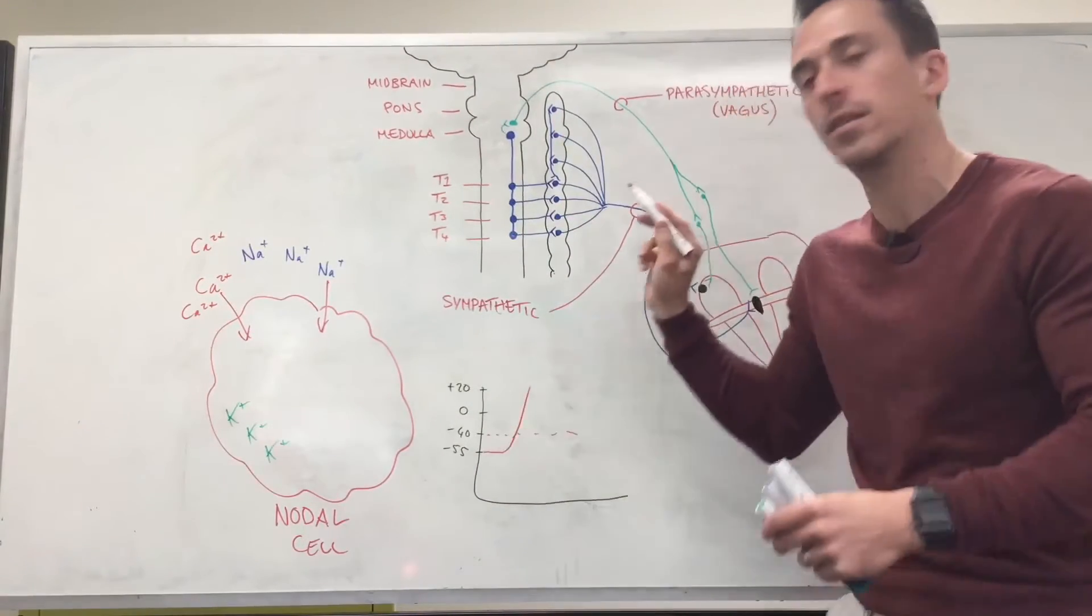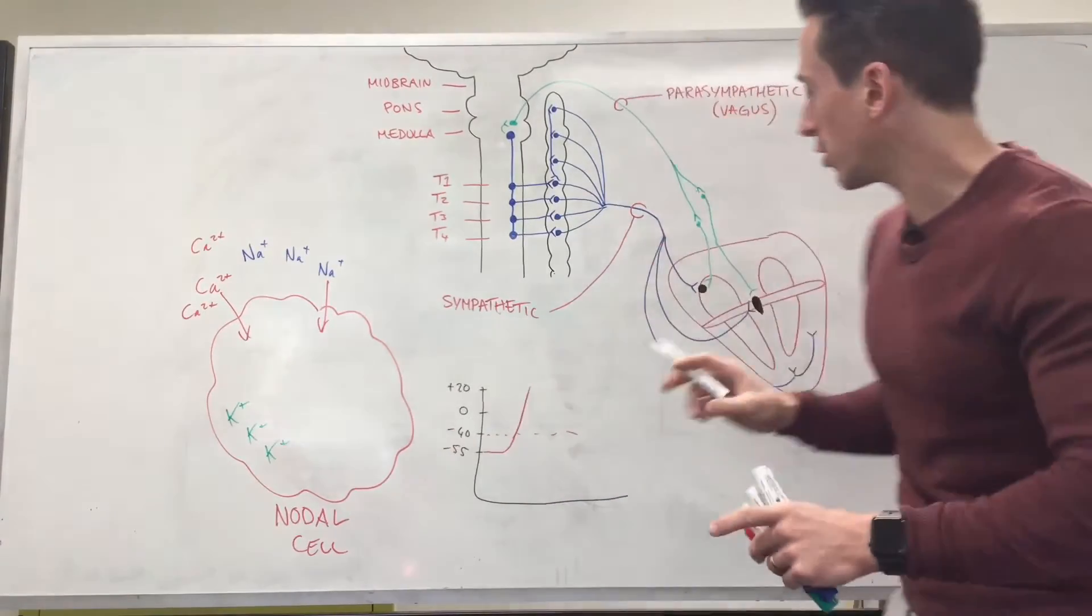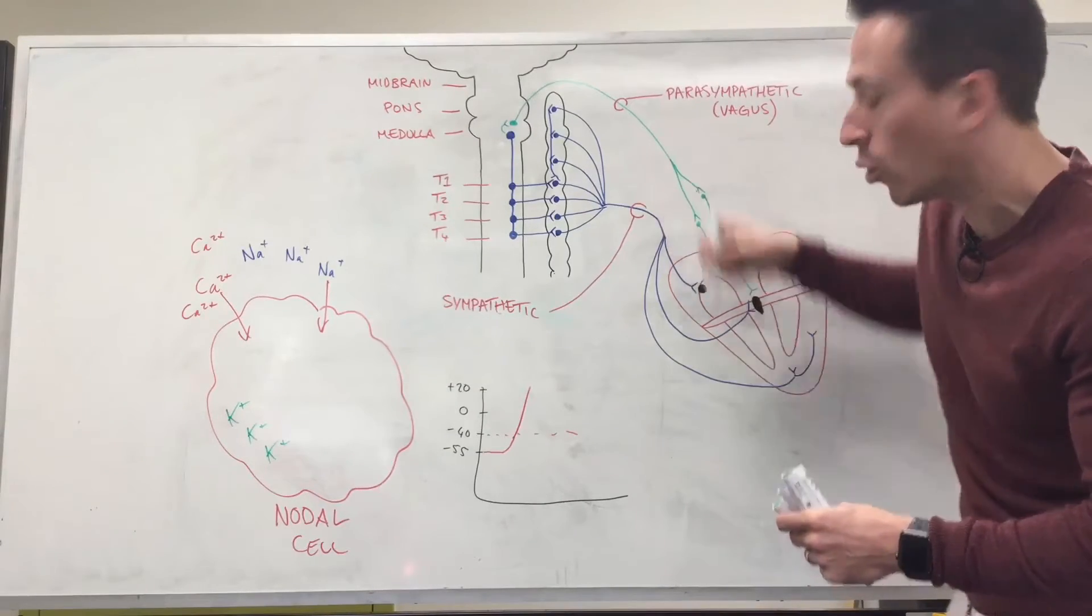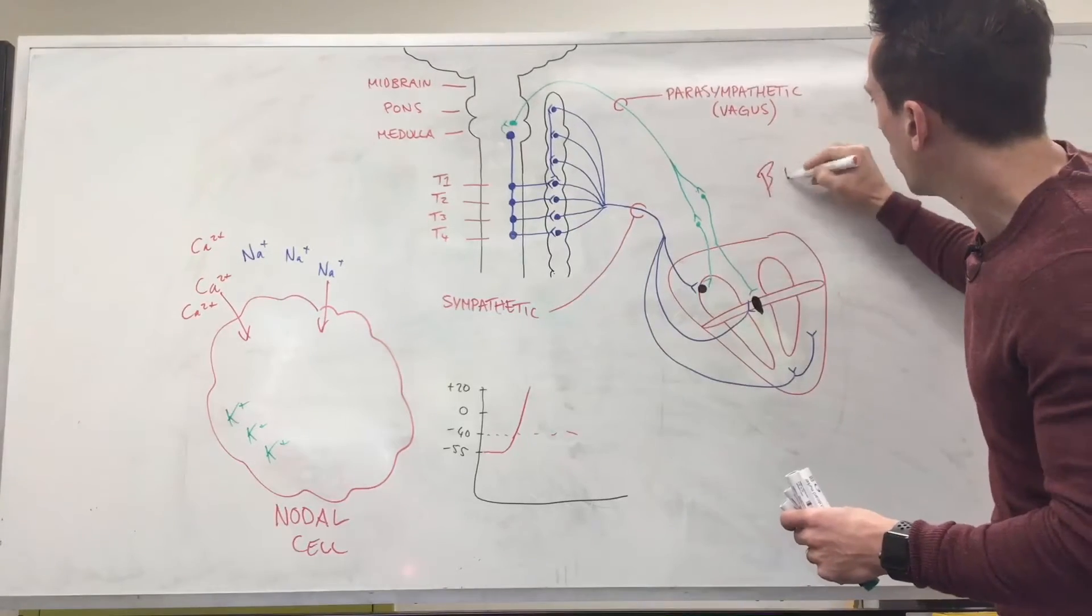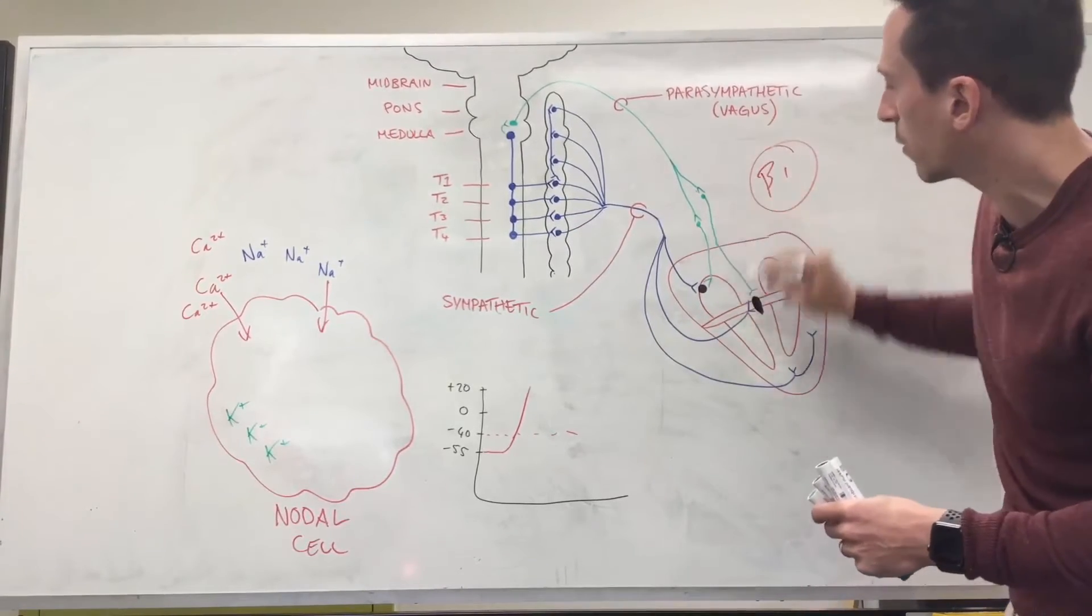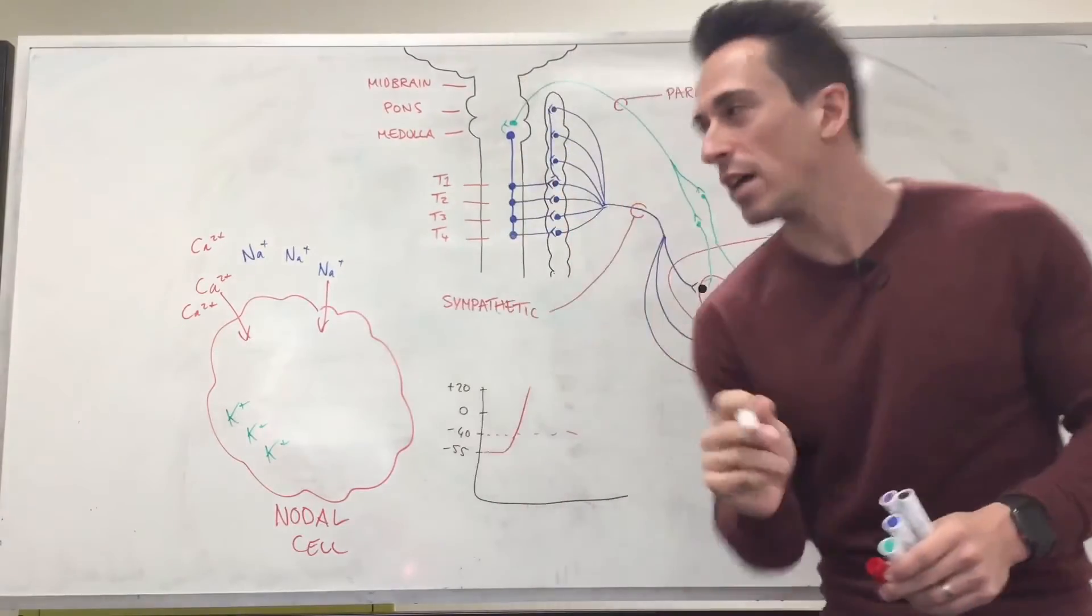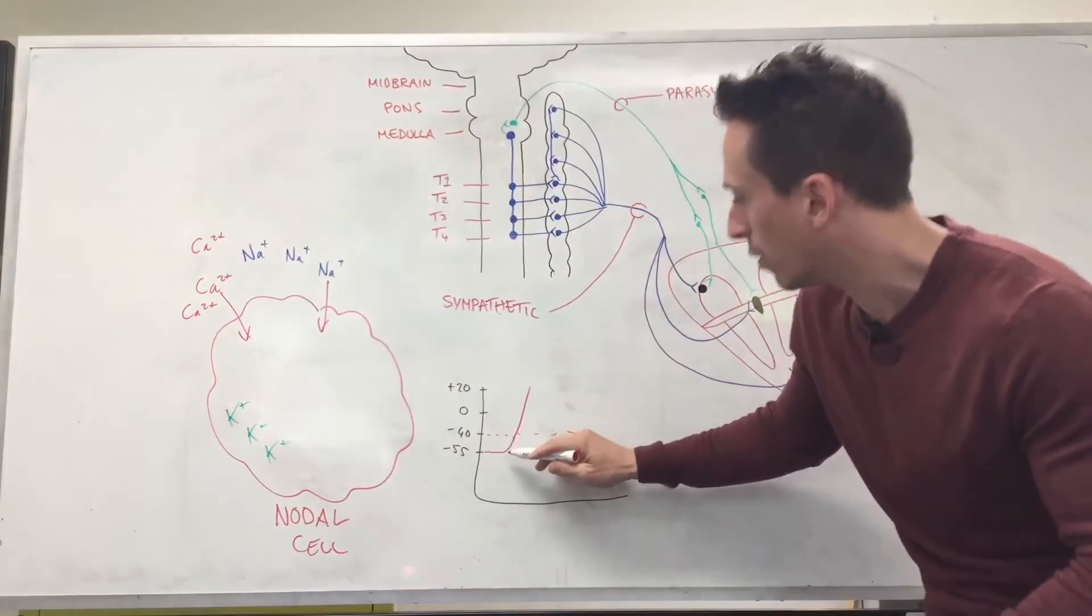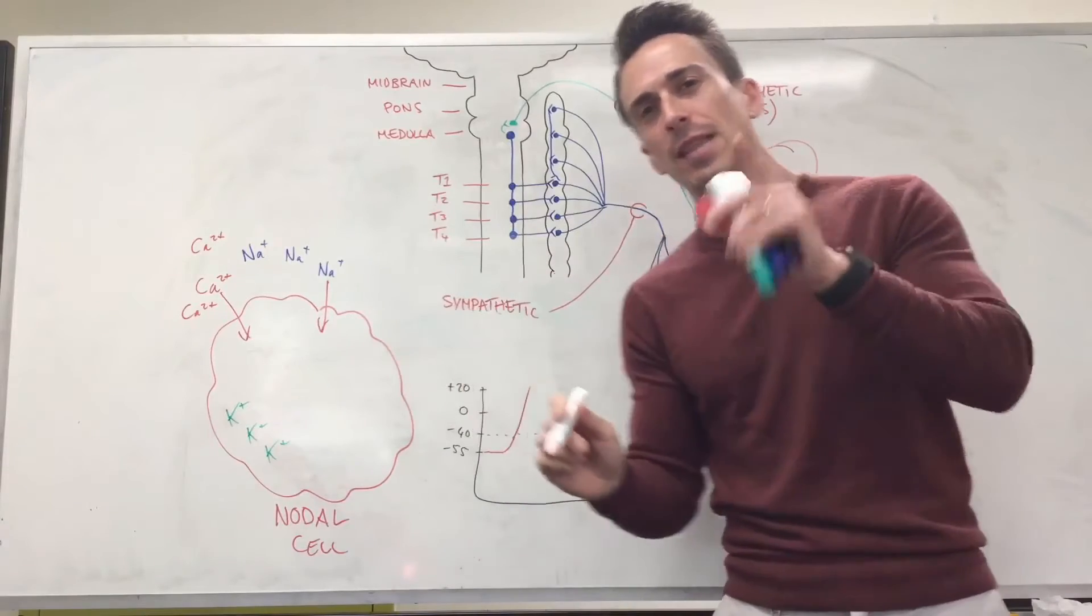Now what we've done is we've sent an electrical signal through the SA node and the atria. What the sympathetic neurons do—the sympathetic innervation when it releases adrenaline or noradrenaline—is it binds to specific receptors here that are called beta-1 receptors. Beta-1 receptors are located at the SA node, AV node, and the myocardium, and what they do is they let sodium and calcium in, allowing for this to happen more frequently. Hence the heart rate increases—that's the sympathetic neuron.